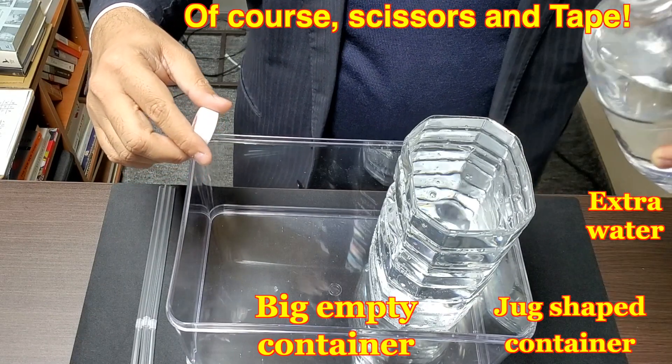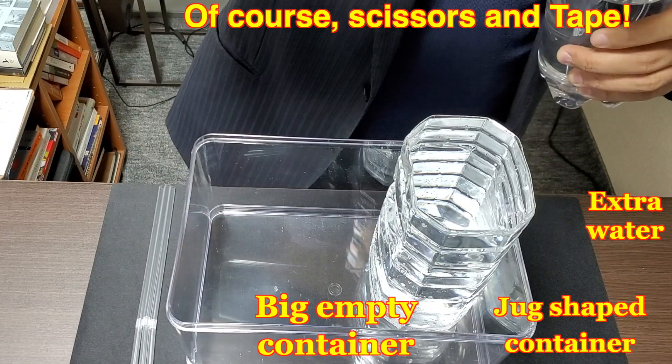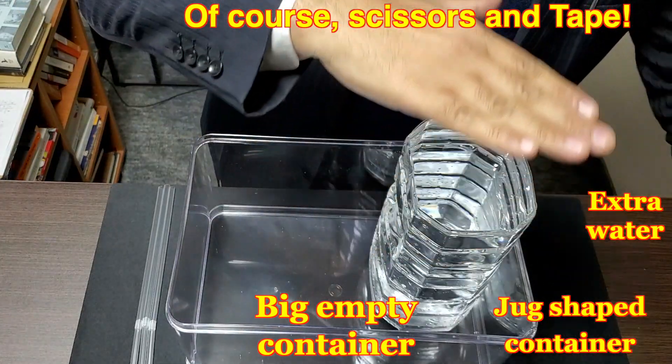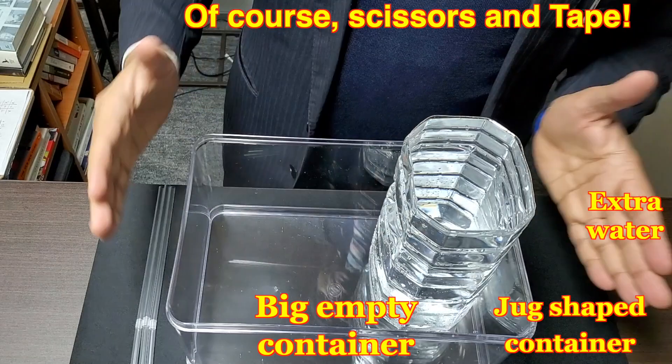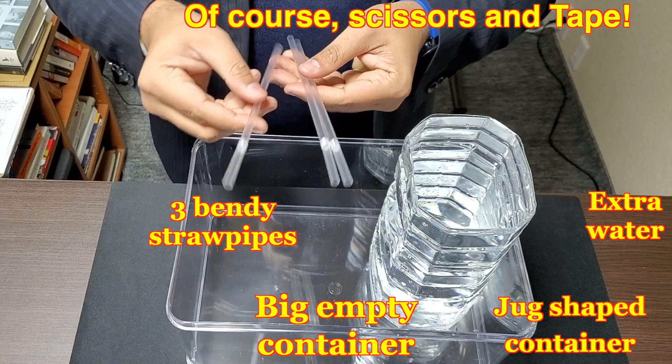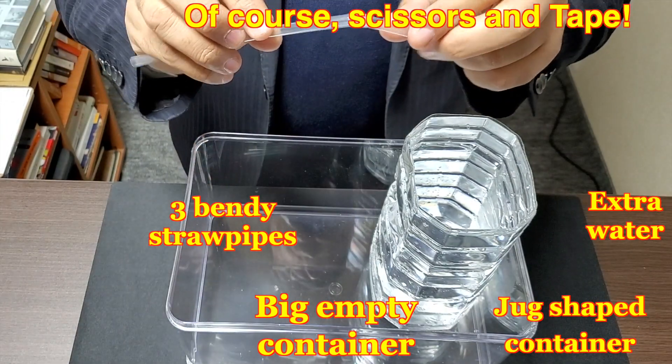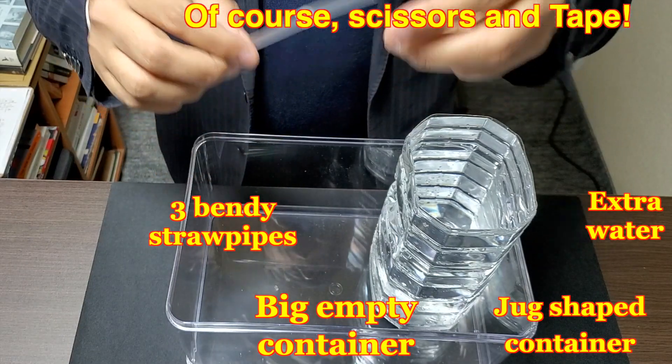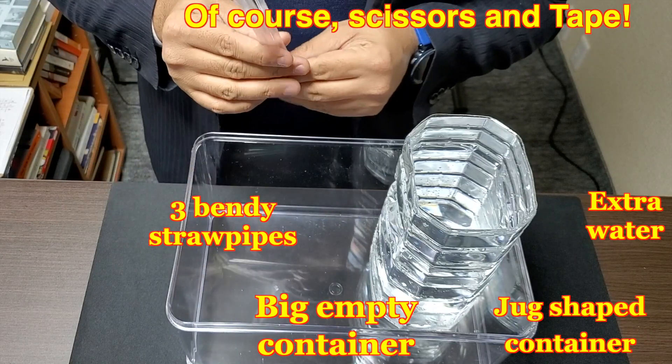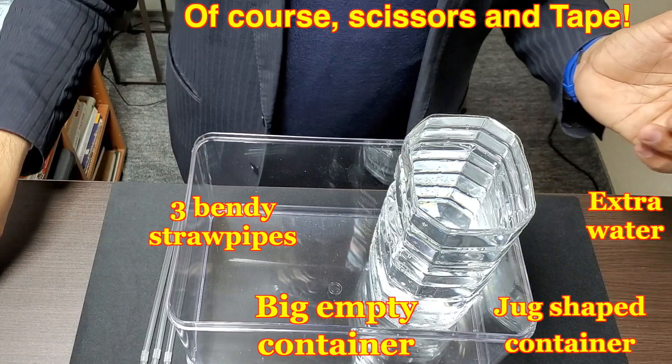You have to fill it to the brim, otherwise the experiment might not work as well as it should. So here we have filled our smaller reservoir up to the brim, the bigger reservoir is empty, and here are a few straw pipes. You can use maximum three straw pipes to create an automatic siphon, and that's the things you need for this challenge.